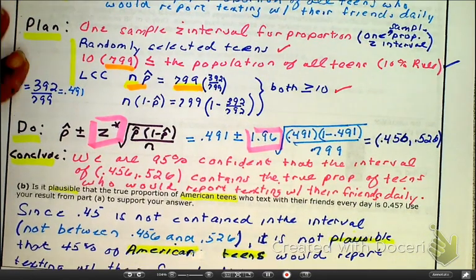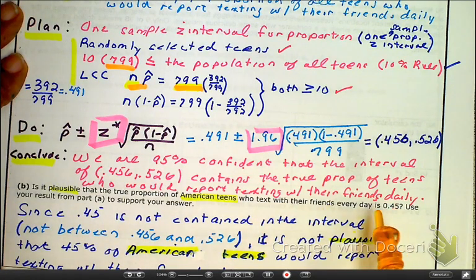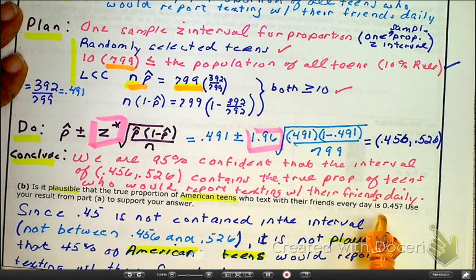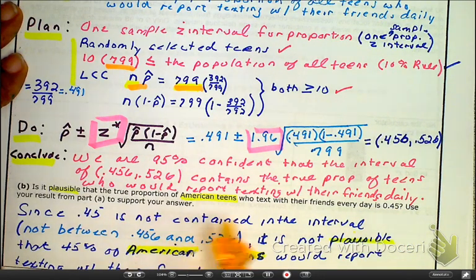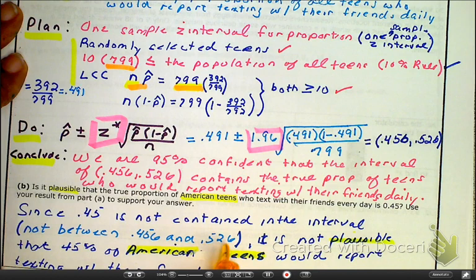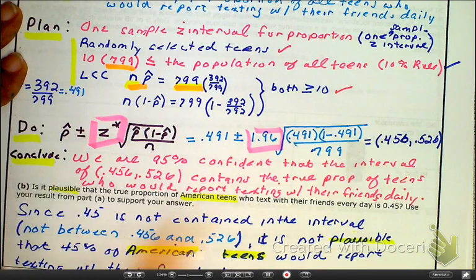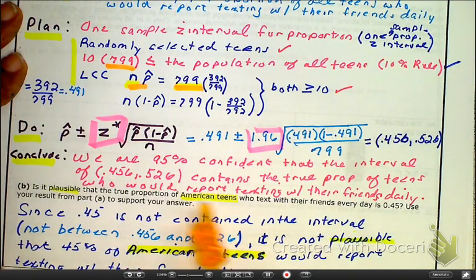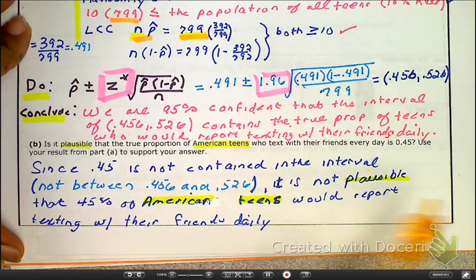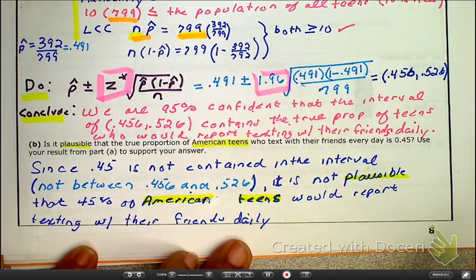So, that takes me to question B. They want to know, is it plausible? Is that value that we found plausible? Well, this value right here, 0.45. Well, 0.45 is not captured. It is not contained in the interval. So, in other words, it's not between the numbers of 0.456 and 0.526. And, because it is not inside of that interval, it is not plausible. And, notice here, why did I use that term? Because they use that term. Why did I say American teens? Because they utilize the terminology American teens. And, of course, they're talking about daily.